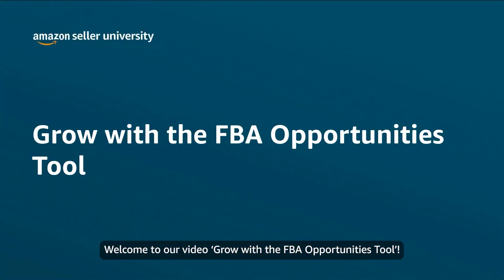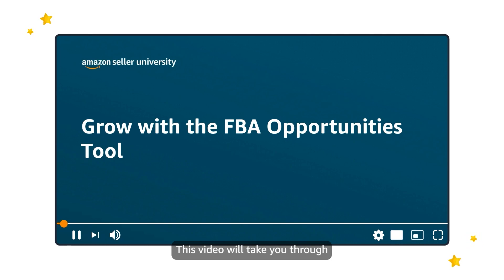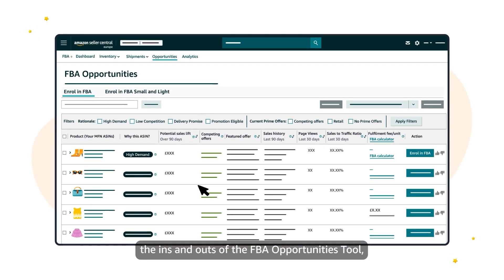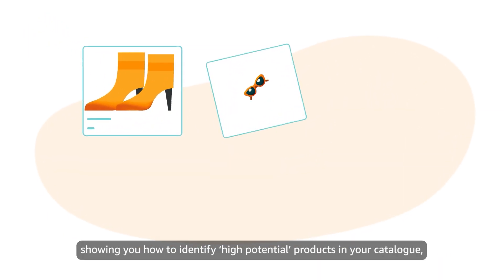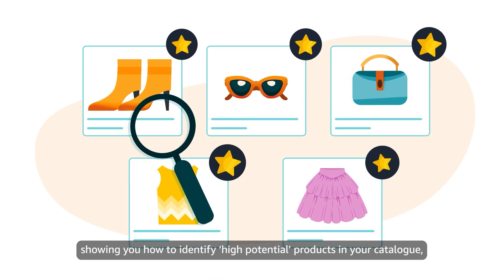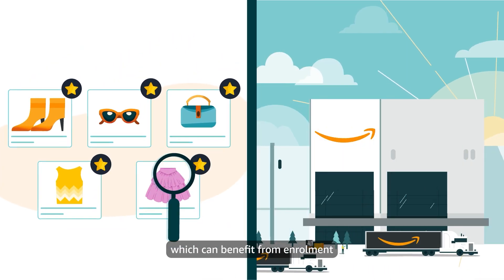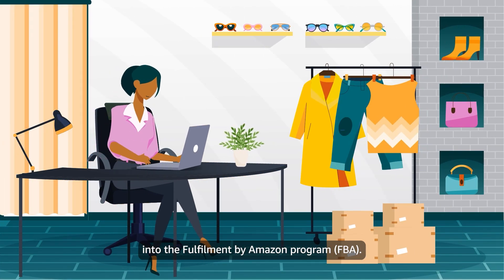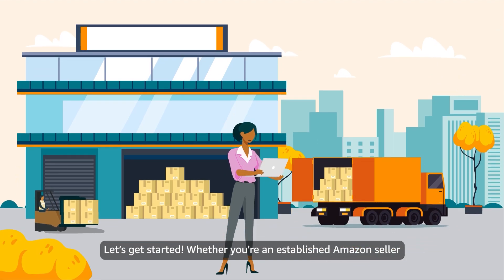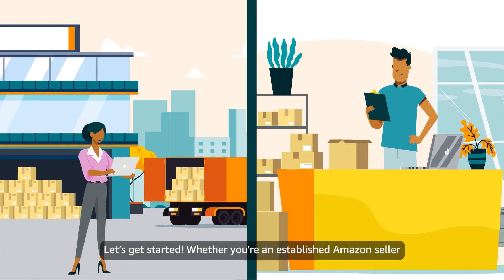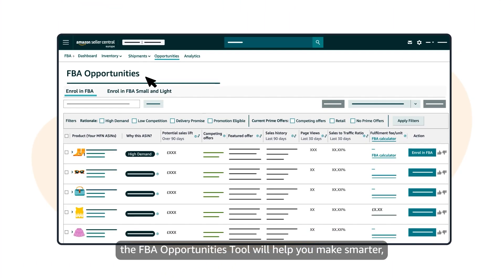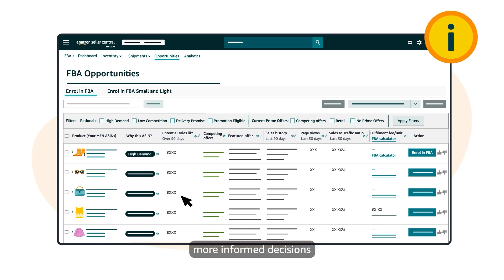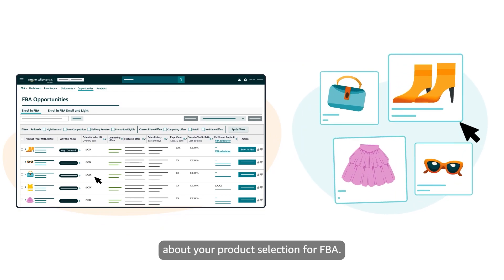Welcome to our video Grow with the FBA Opportunities Tool. This video will take you through the ins and outs of the FBA Opportunities Tool, showing you how to identify high potential products in your catalogue which can benefit from enrolment into the Fulfillment by Amazon programme. Whether you're an established Amazon seller or just starting out, the FBA Opportunities Tool will help you make smarter, more informed decisions about your product selection for FBA.